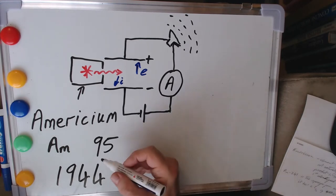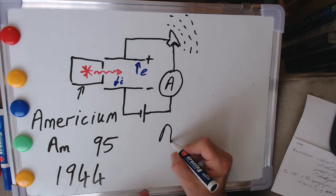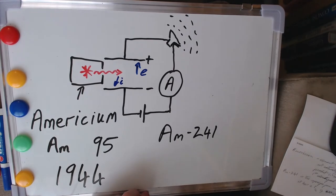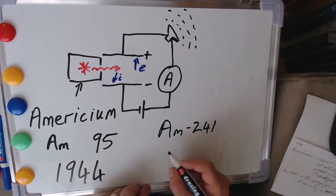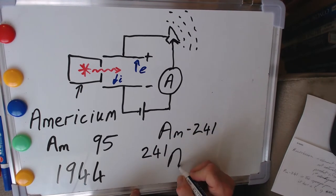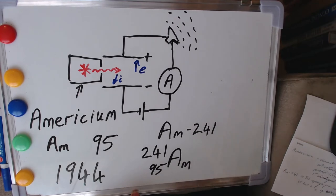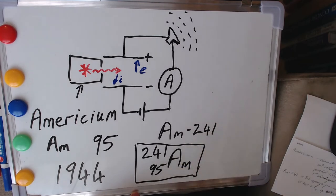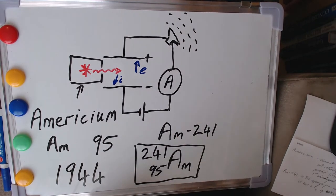And the specific form of americium used in this radioactive source is something called americium-241. It's the particular isotope of americium. And you'll see that in those of you who are into proper nomenclature, this will be written as a superscript to americium, and the 95, its place in the periodic table, would appear down there as a subscript. Alright, so this is our special radioactive material, man-made radioactive material, that is actually driving our smoke detector.